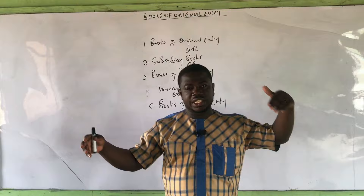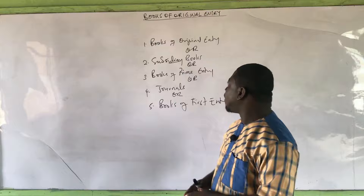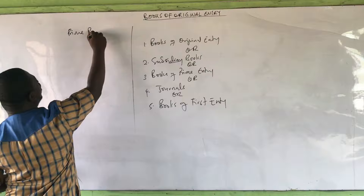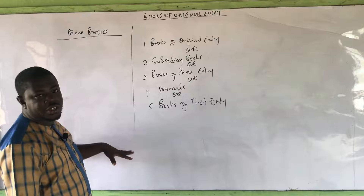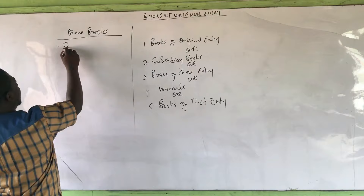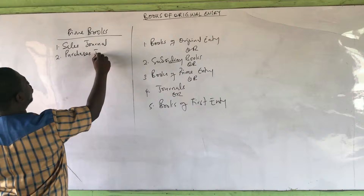We have four different categories of ledger: the sales ledger, the purchases ledger, the private ledger, and the general ledger, or what we call the nominal ledger. When we come to the books of original entry, the first one is the sales journal — also known as the sales day book — and then we have the purchases journal. These are books that are called books of original entry. They could also be called day books, because transactions are recorded in them daily.